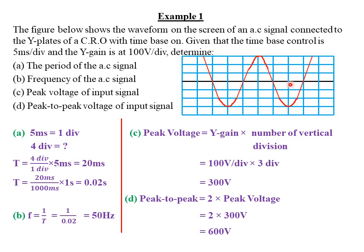Therefore, when counting the period, we are going to count the number of horizontal divisions. The period is measured on the time base, which is connected to the X plates responsible for horizontal deflection. We count the number of horizontal divisions making one complete oscillation. Starting from a particular pointer, we have half an oscillation plus another half, giving one complete oscillation — that is one, two, three, and four horizontal divisions.